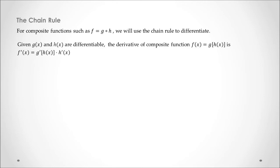The chain rule states that for the given g of x and h of x, two differentiable functions, the derivative of the composite function f of x, which consists of g of h of x, is the derivative of g of h of x times the derivative of h of x. So we first derivate the function itself, and then we also multiply it by the derivative of the argument of that function.